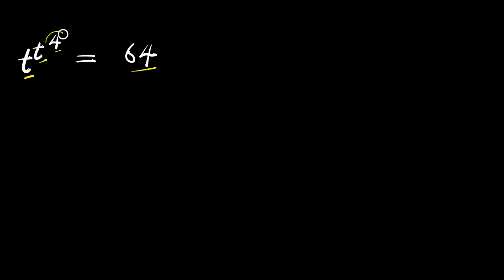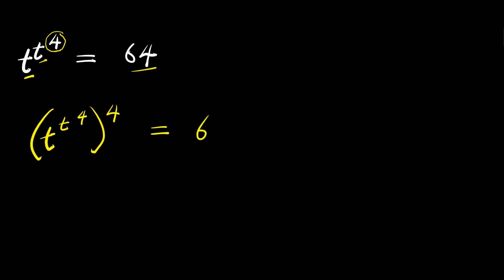Now, because we have 4 here, what we can do is to raise each part of this equation to the power of 4. So t to the power of t to the power of 4, raised to the power of 4, equals 64, and we also raise the right side to the power of 4.